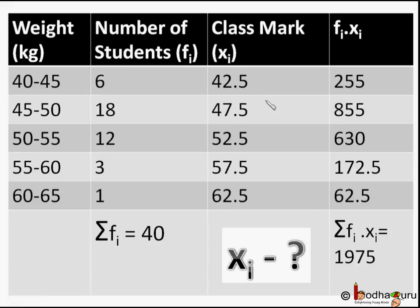The class mark for the 45 to 50 class is 45 plus 50 by 2, that is 95 by 2, which is 47.5 and so on. Our main goal using this method is to reduce xi significantly so that calculation becomes easier. How about subtracting a fixed value from each of these xi? But what will be that value?